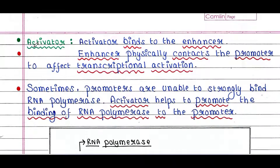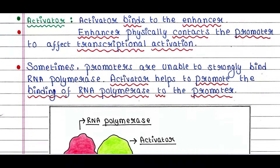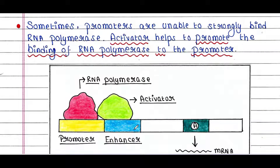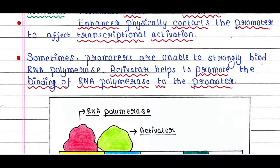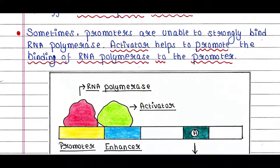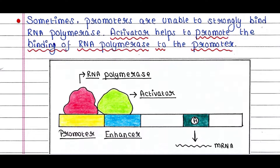First is the activator. The activator binds the enhancer, and the enhancer physically contacts the promoter to affect transcriptional activation — we can see that the enhancer is physically interacting with the promoter. Sometimes promoters are unable to strongly bind RNA polymerase, and the activator helps to promote the binding of RNA polymerase to the promoter. This is exactly the same as what we have seen in prokaryotes.